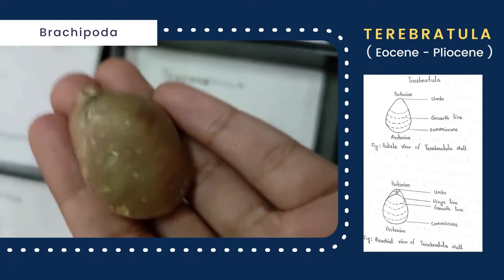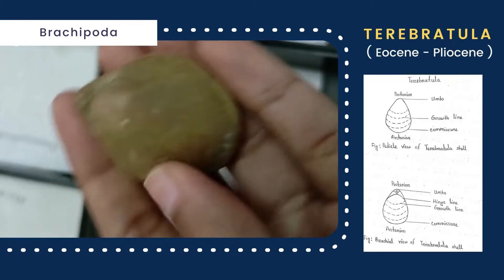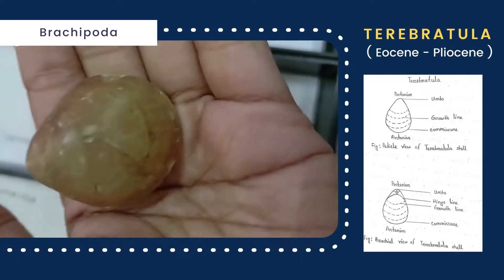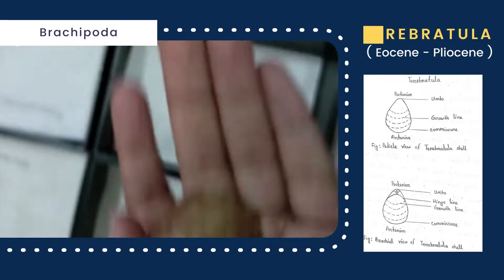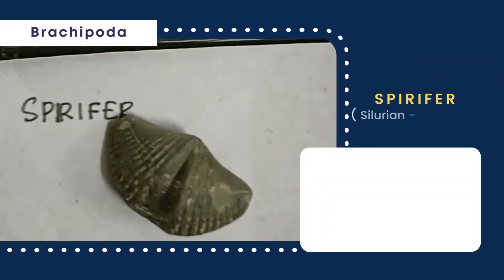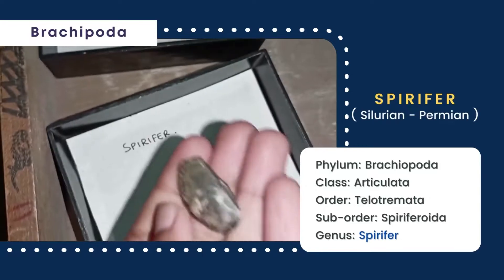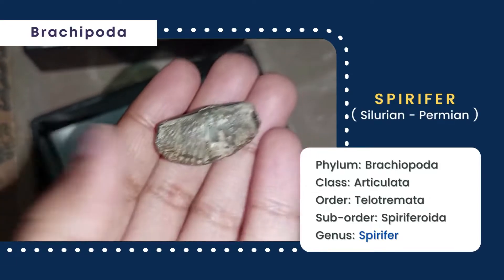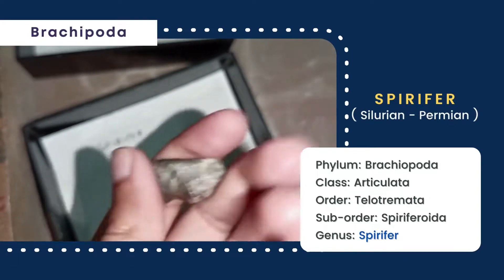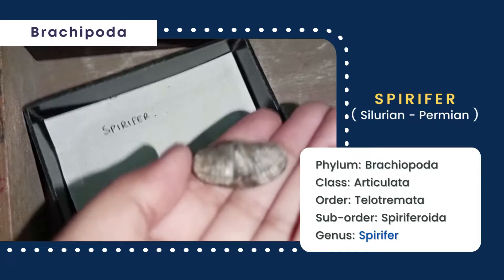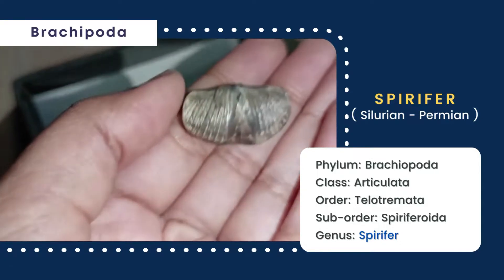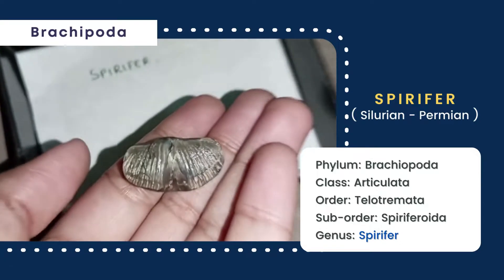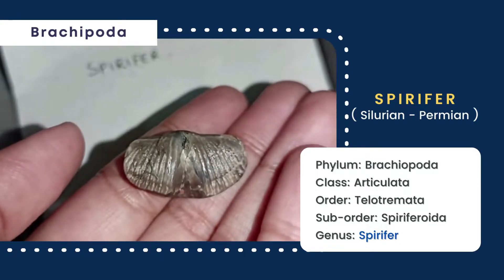In the beak region of the brachial valve, the length is greater than the width. Next is Spirifer, whose shell is subtriangular in shape and biconvex in outline. The length of the shell is less than the width.